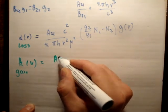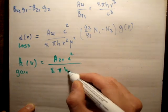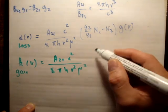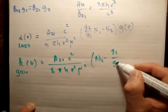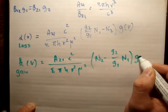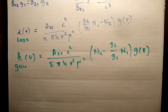You're going to get that. It's going to be A21 c squared over 8 pi h nu squared nu squared times n2 minus g2 over g1 n1 times g of nu. So that's our gain coefficient.